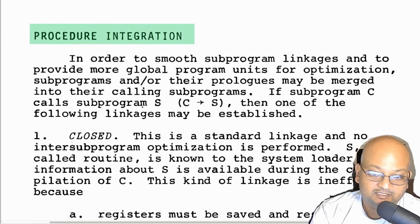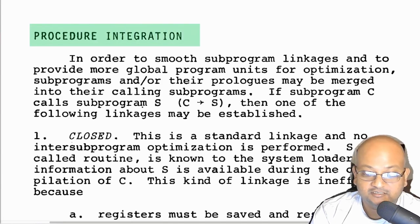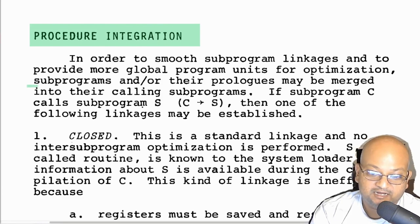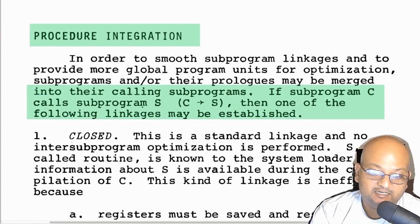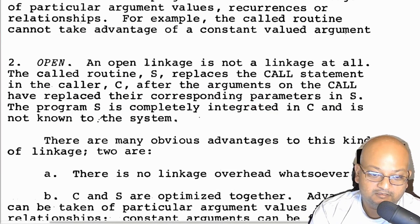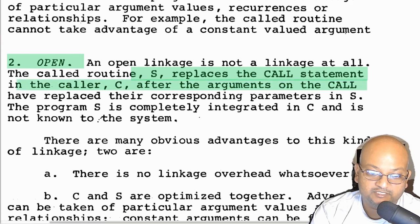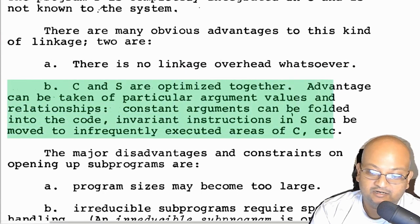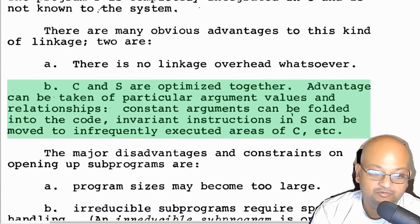So let's dive right into the list of optimizations. The very first one is what they call procedure integration, but which many might recognize today as procedure inlining. The basic idea is that if a program C calls another subprogram S, there are various ways in which S can get linked into C. The most common of which, and this is what we currently call procedure inlining, is to replace the call altogether with the body of the procedure getting called.